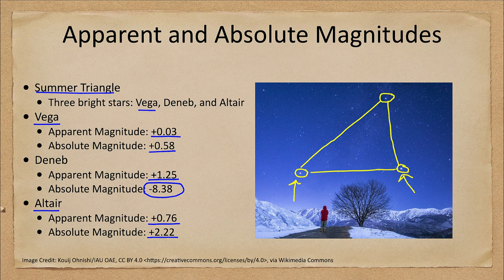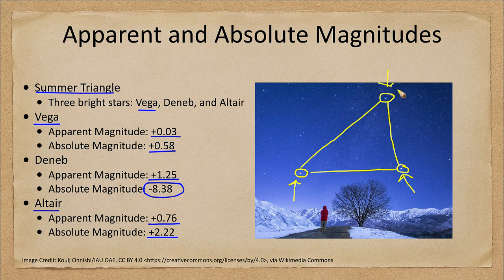Deneb is many times further away and only looks as bright as it does because of its immense intrinsic brightness. Intrinsically, it is by far the brightest of the three Summer Triangle stars, even though it appears the faintest of the three in our sky.